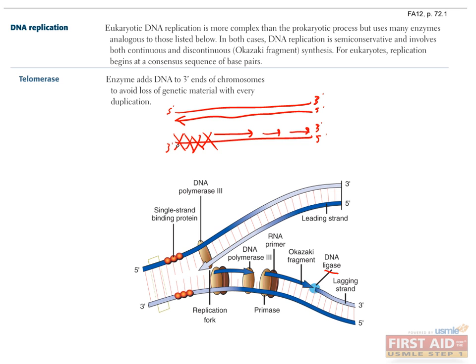The solution is to use telomerase, which is a ribonucleoprotein that repetitively adds a 6-nucleotide sequence, TTAGGG, to the end of the lagging strand, creating non-coding junk DNA that can be lost without harming the function of the cell.